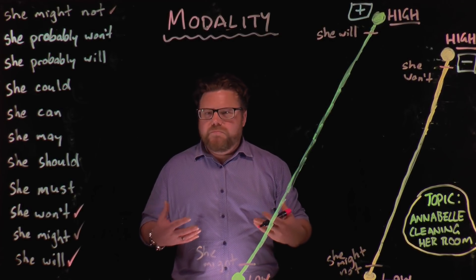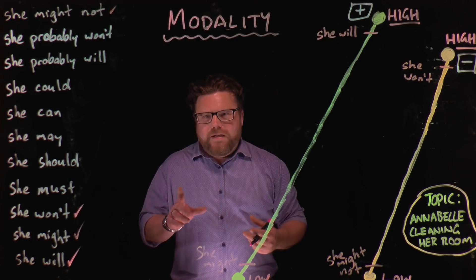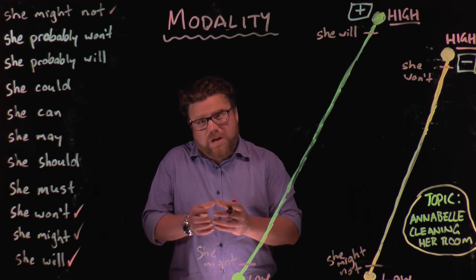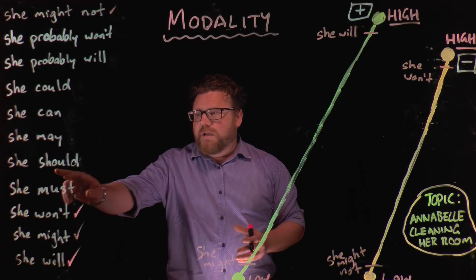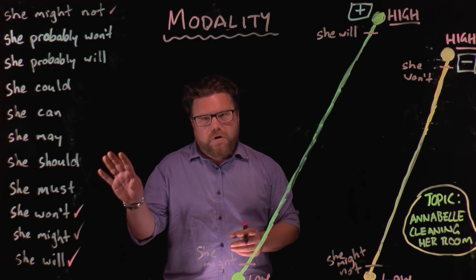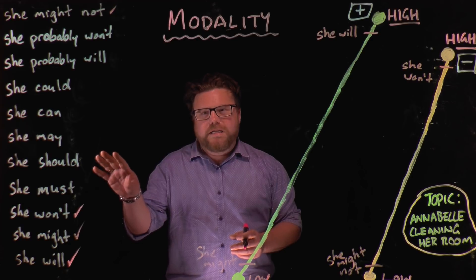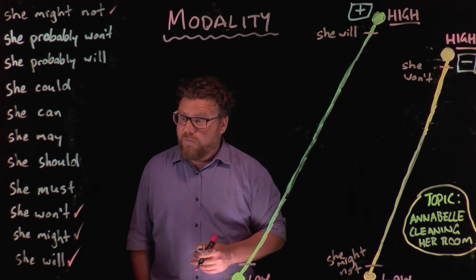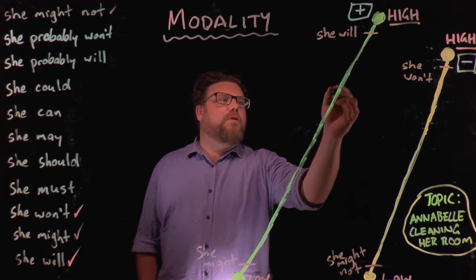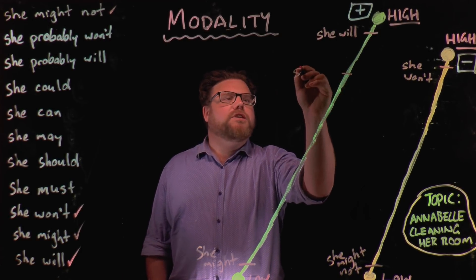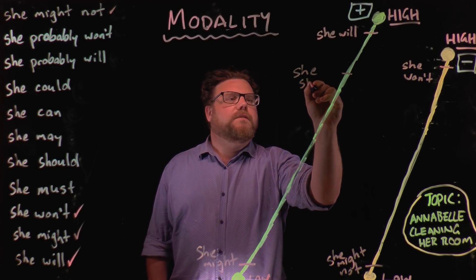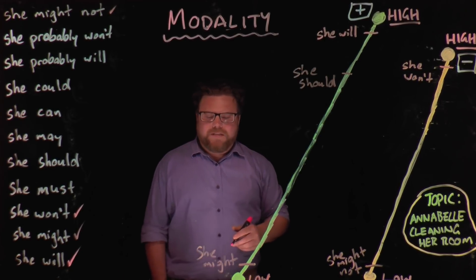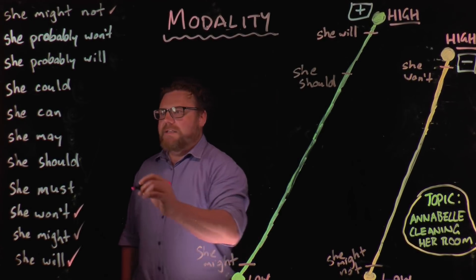Now, the other way you can use modality is to show obligation — that means when you have to do something. 'She should' is actually quite high in its modality, showing that she has an obligation to clean her room. She really should clean her room. So we can put that one up quite high on the scale. That's not necessarily saying that she will, but it's saying that she should.